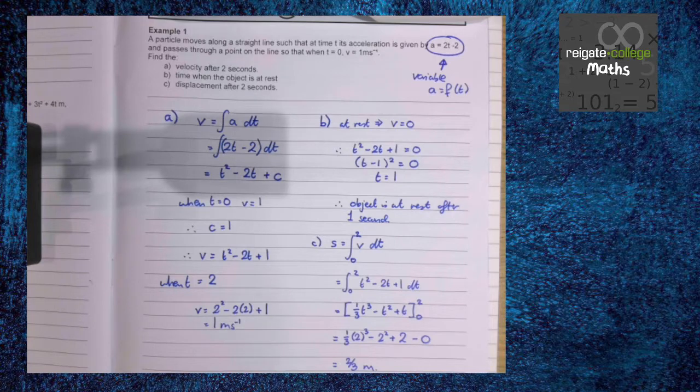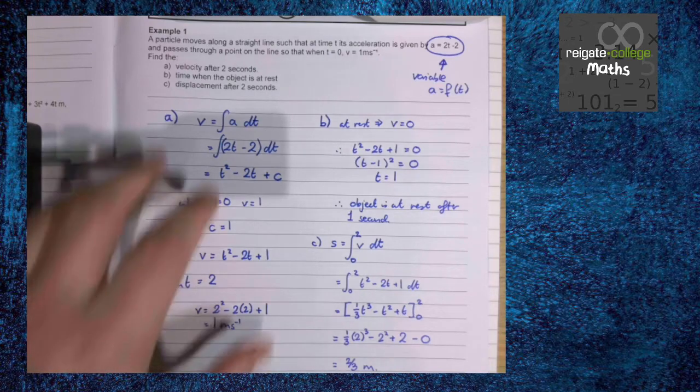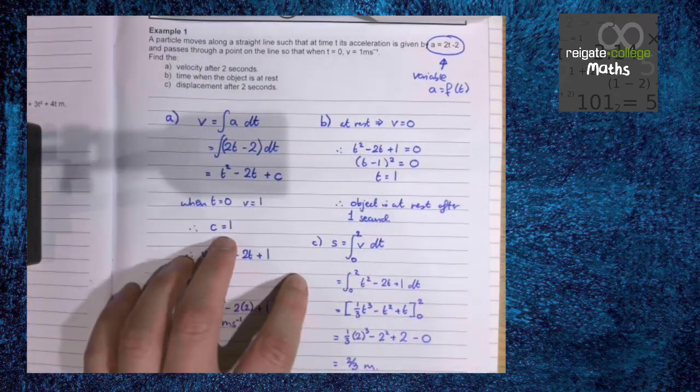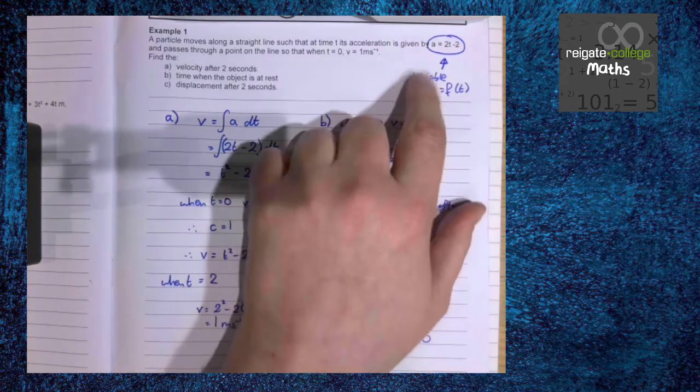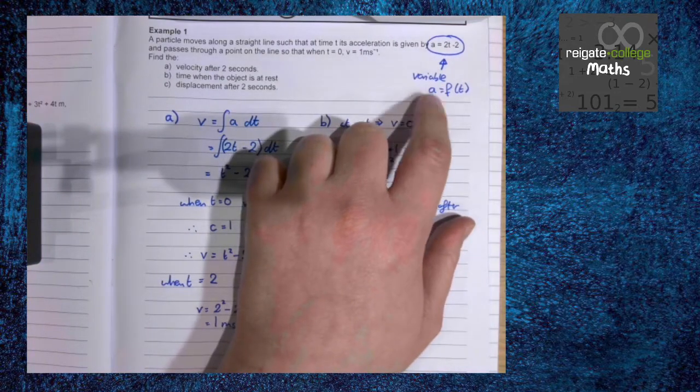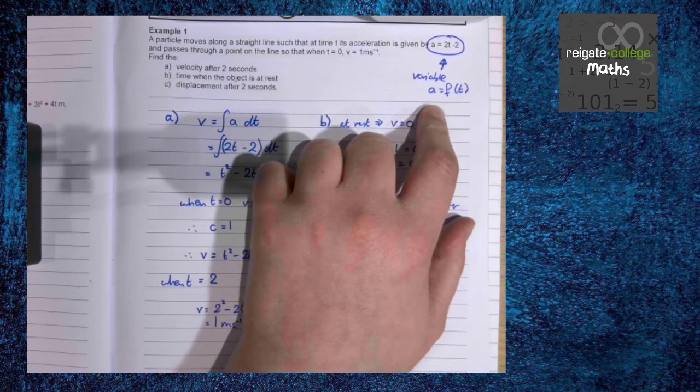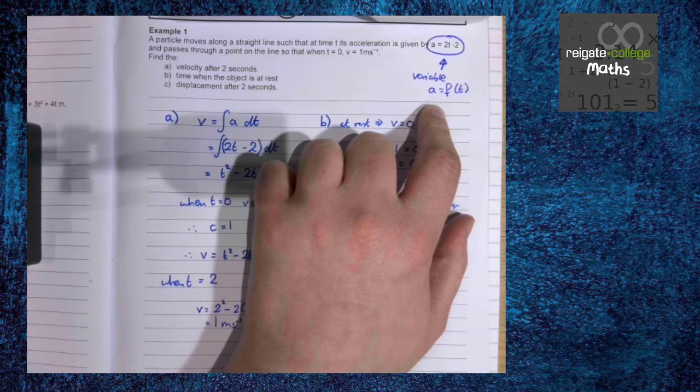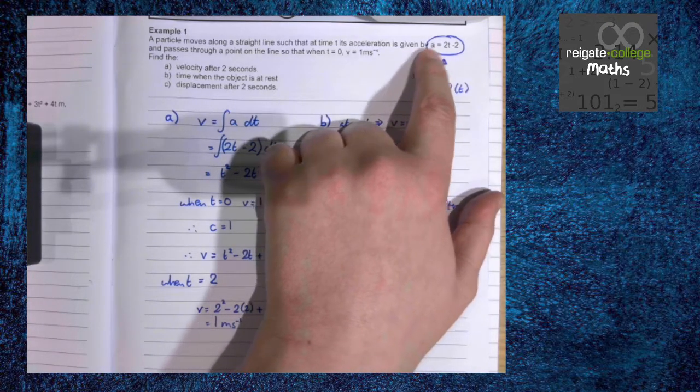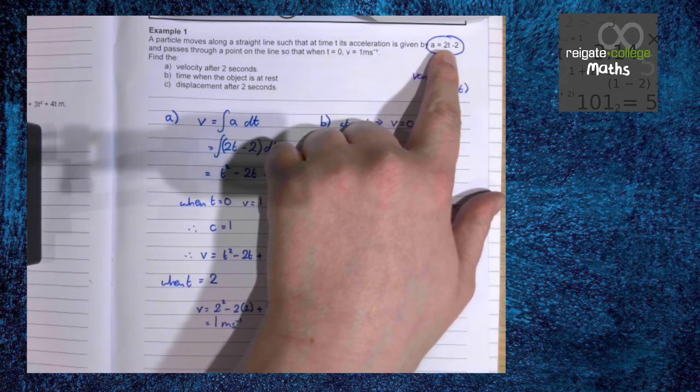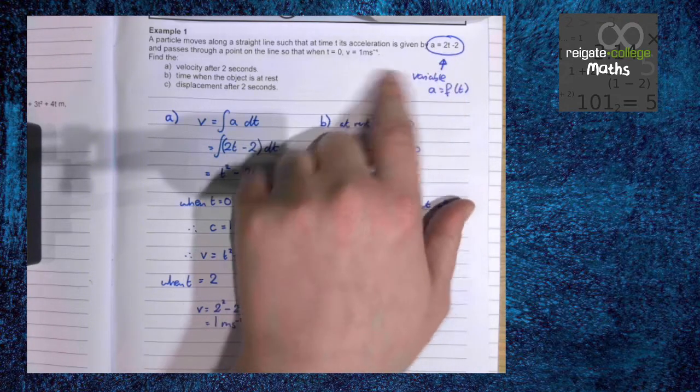Very straightforward in terms of the process. But the thing students typically find difficult about this is translating the words into the maths. The key thing is that if you have variable acceleration, you are definitely doing differentiation or integration. And what will change will depend on what information you're given right at the start. Here we know that a is linear but it's got a t in it, so we know we're integrating.